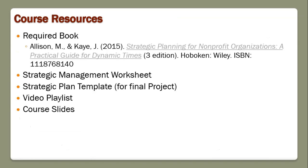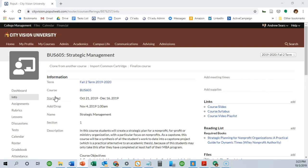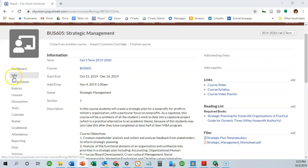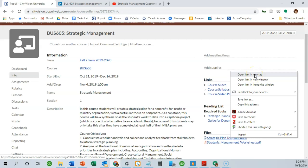You should have the course book — you cannot pass this course if you don't have it. There are four other key resources: a worksheet that we'll refer to in almost every assignment, a strategic plan template you'll use for the final project — with every week contributing a component — a video playlist for the course, and course slides you can download. If you go to the info tab, you can find all of these: the course slides, the course video playlist, the strategic plan template, and the strategic management worksheet.